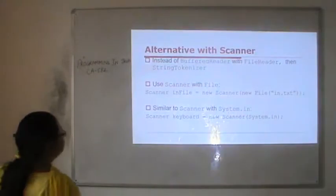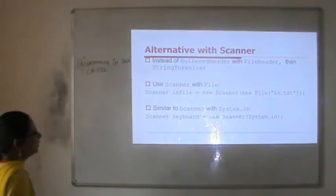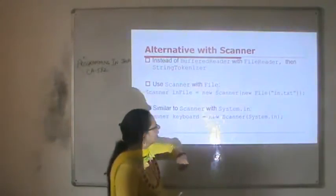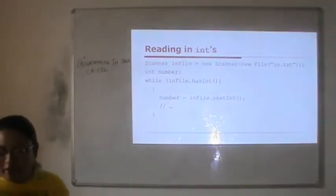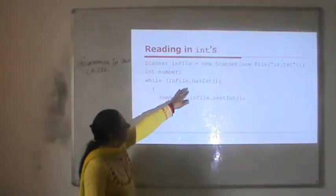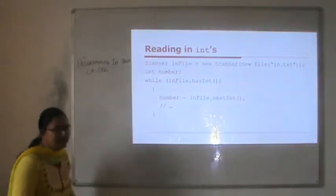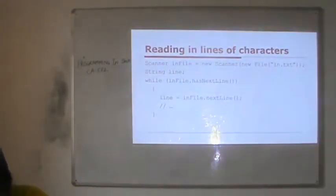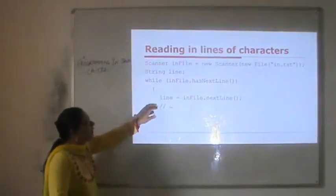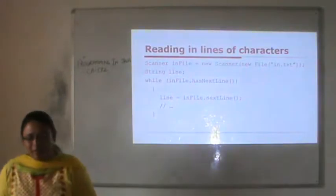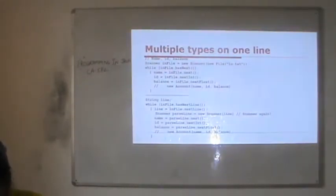An alternative method for reading: instead of BufferedReader with FileReader, we can use Scanner with a File object. We create a new Scanner instance and pass the file name. This is similar to using system.in. To read integer values from a file we use nextInt, and hasNextInt returns true if the file contains integer values. To read lines, we use nextLine, and hasNextLine returns whether the file contains more characters.